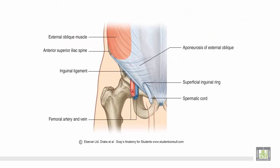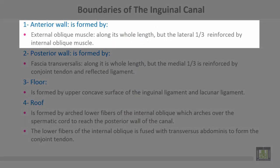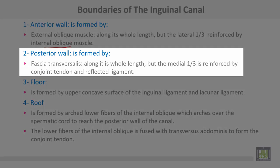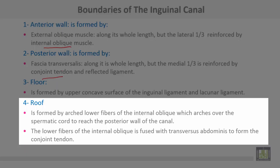The inguinal canal extends between the deep ring and superficial ring, and this is the exit of the spermatic cord. The boundaries of the inguinal canal: the anterior wall is formed by the external oblique muscle along its whole length, but the lateral third is reinforced by the internal oblique muscle. The posterior wall is formed by fascia transversalis along its whole length, but the medial third is reinforced by the conjoined tendon. The floor is formed by the upper concave surface of the inguinal ligament and the lacunar ligament. The roof is formed by the arched lower fibers of the internal oblique, which arch over the spermatic cord to reach the posterior wall of the canal. The lower fibers of the internal oblique are fused with transversus abdominis to form the conjoined tendon.